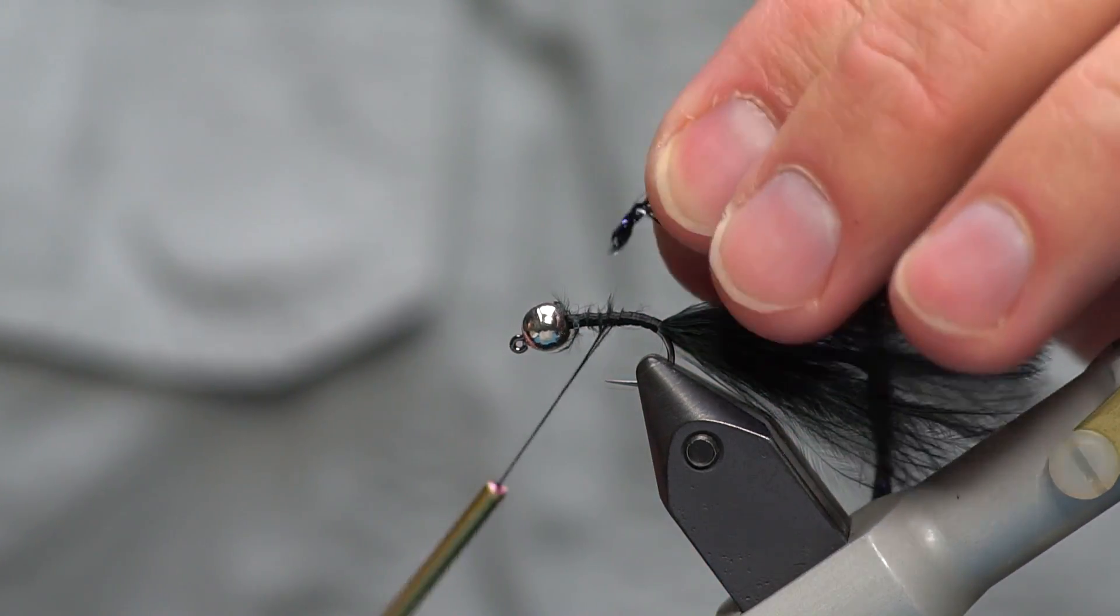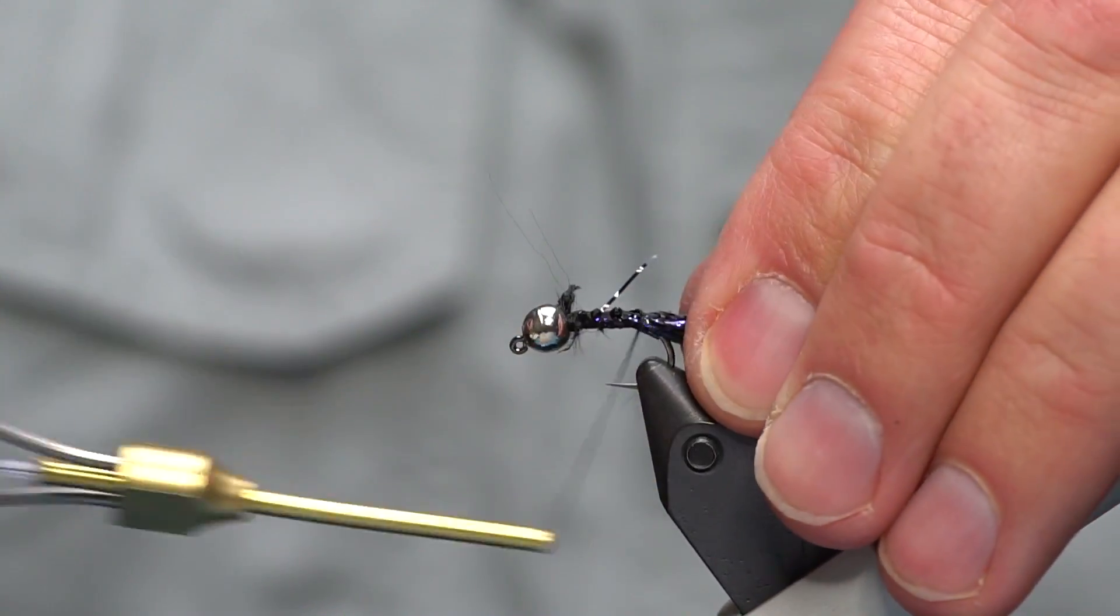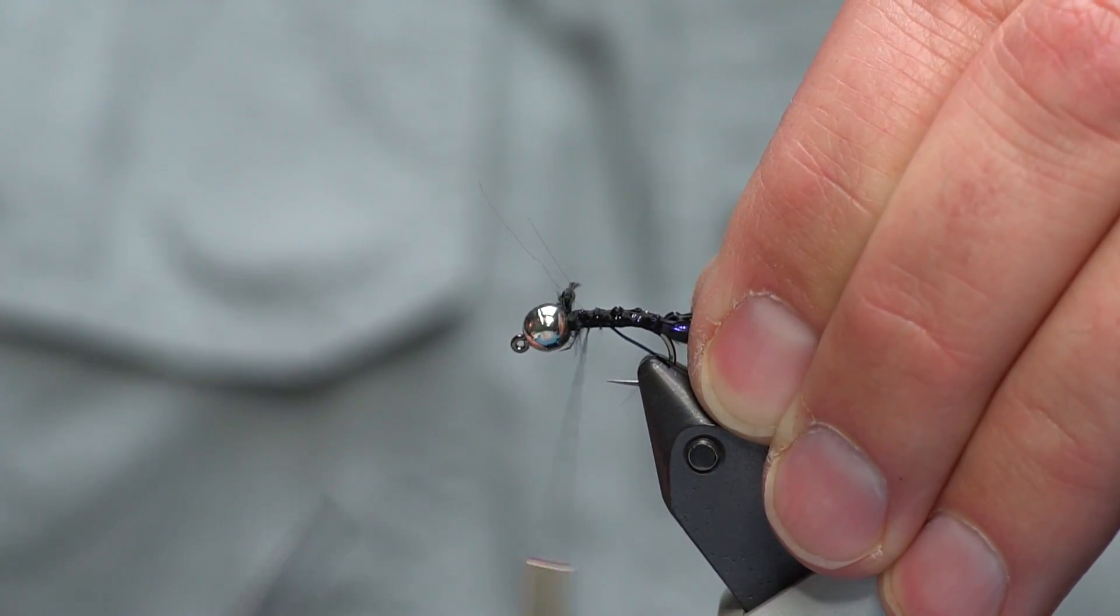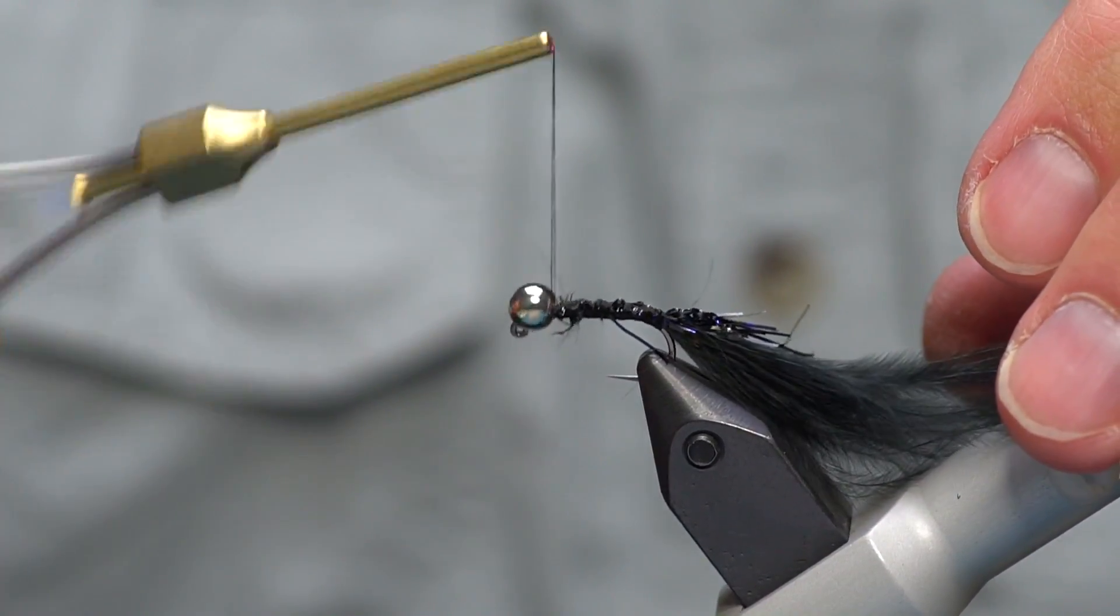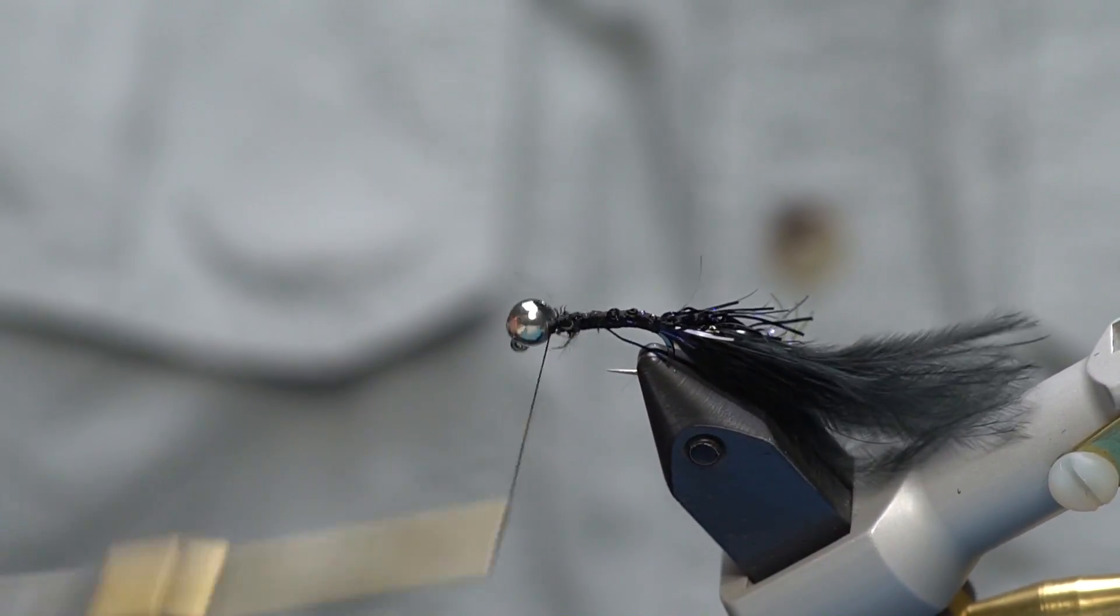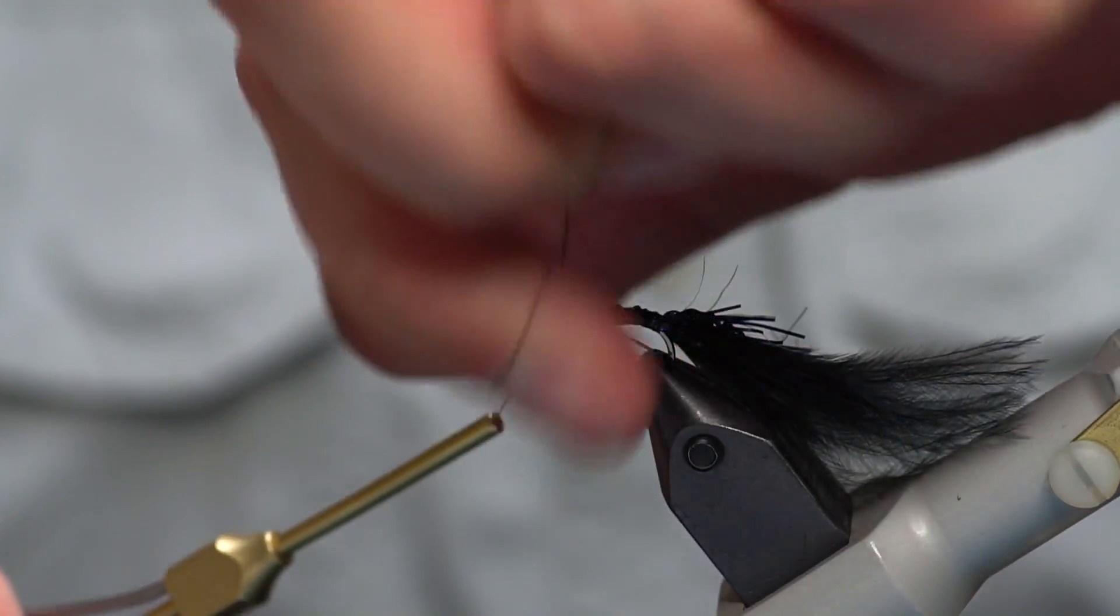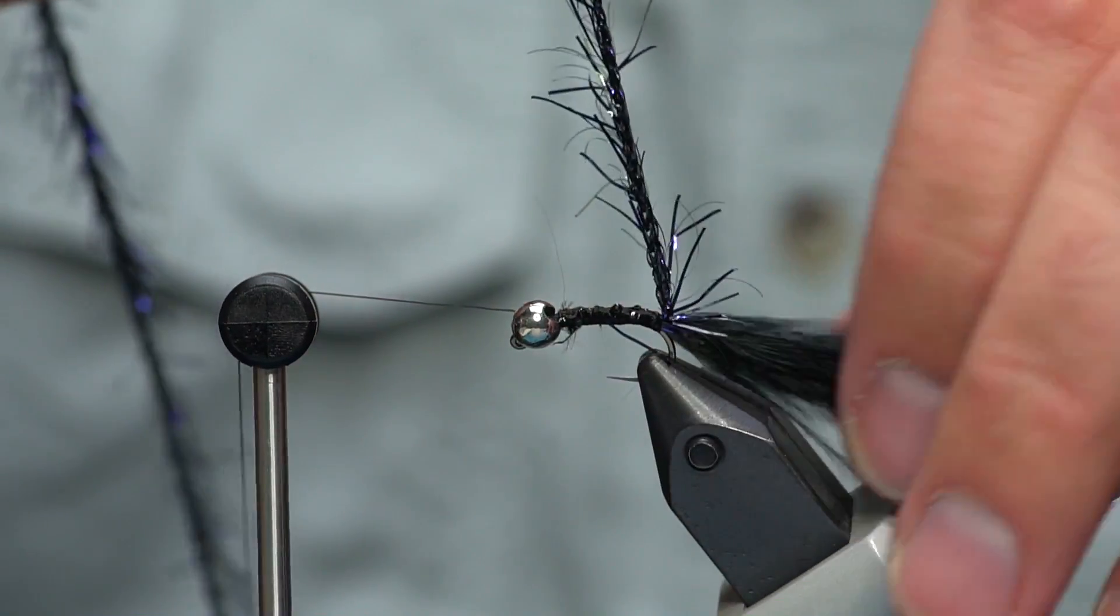This black polar chenille looks almost black and purplish but this particular color is just deadly. To keep it nice and consistent I'm going to tie it in right behind the bead and then work it back to where my marabou tail starts. My bead rotated on me a little bit so I'm going to rotate it back. I'm going to put a few extra wraps to hold it in place and then I'm going to half hitch and use the bobbin cradle on the Renzetti Master.